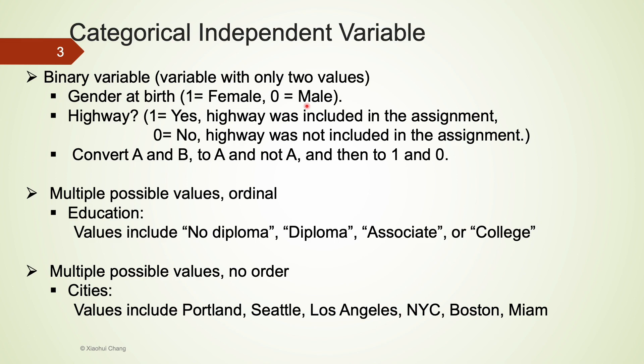Another example is whether the driving assignment involves the highway or not. The convention is to use 1 to represent yes, and 0 to represent no. It is very important to notice that, as long as a variable has two categories, for example, A and B, we can always use a binary variable to represent it. We can change A and B to A and not A, and then 1 to 0.